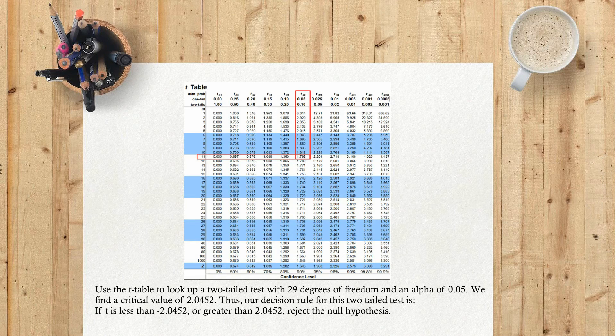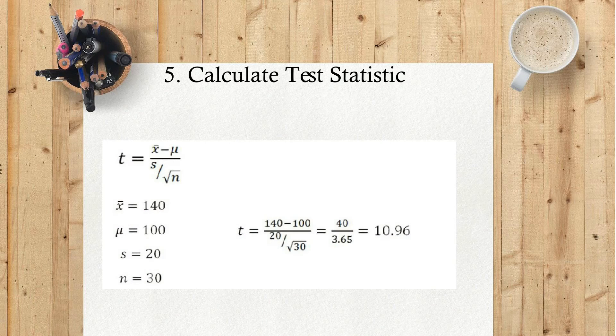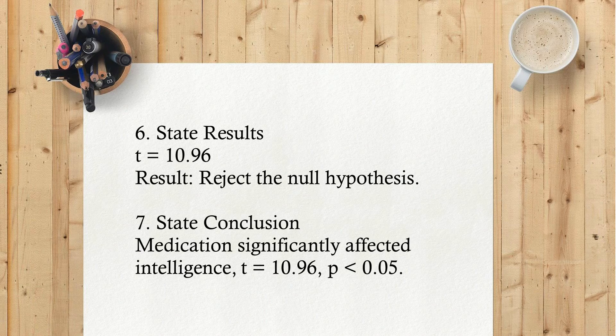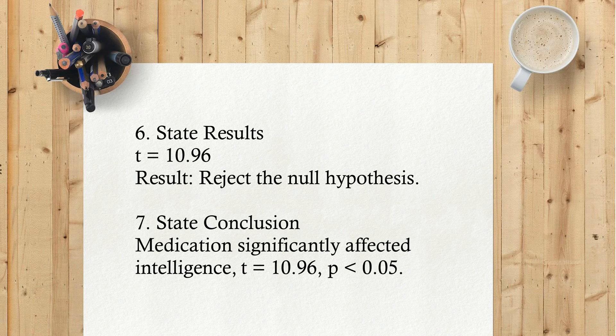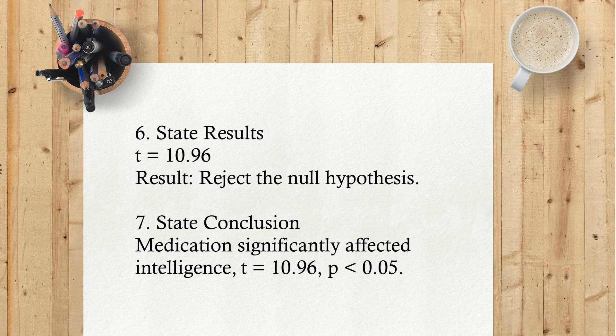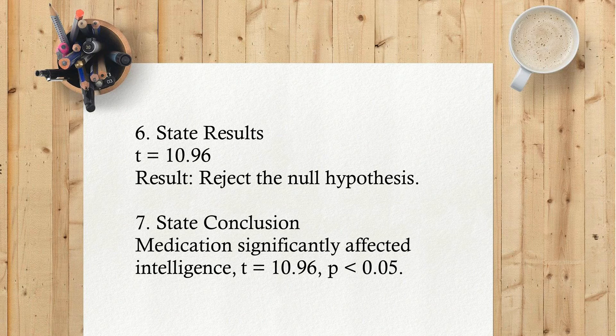5) Calculate test statistic. 6) State results: t equals 10.96. Result: reject the null hypothesis. 7) State conclusion: medication significantly affected intelligence, t equals 10.96, p less than 0.05.